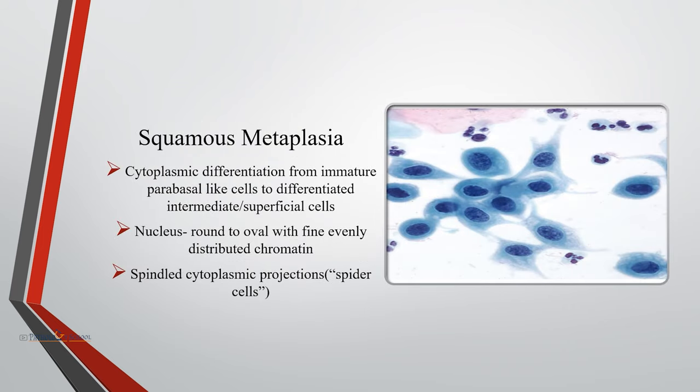In squamous metaplasia, cells show cytoplasmic differentiation from immature parabasal-like cells to differentiated intermediate or superficial cells. The nucleus is round to oval with fine, evenly distributed chromatin. Cells having spindle cytoplasmic projections called spider cells are often seen in conventional preparations, due to disruption of cohesion of cellular attachment by the force of the smearing procedure.